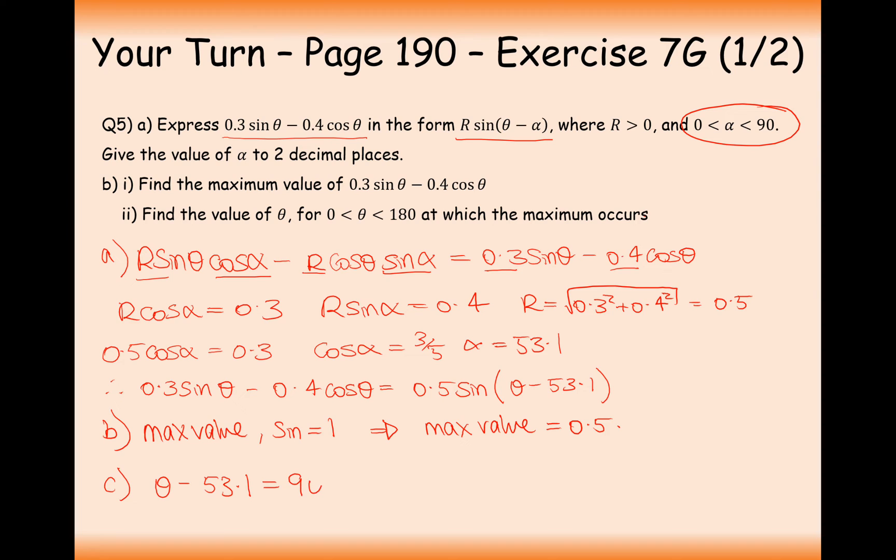Find the value of theta between 0 and 180 which makes this maximum occur. A maximum occurs when the angle is equal to 90 degrees. On the sine graph, at the maximum point, we have a 90 degree angle. Set the angle inside the sine function to 90 degrees and add 53.1 to both sides. We get 143.1 as our value for theta where this maximum value occurs.